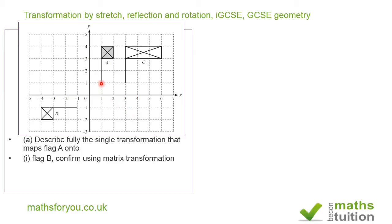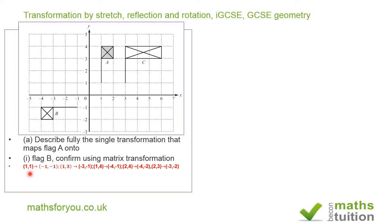First, for flag A to flag B. Taking a point on the object, the coordinates are (1, 1). After transformation, that point moves to (-1, -1). Similarly, the point (2, 3) transforms to (-3, -2). What's happening is that we swap the x and y coordinates and then multiply by minus 1.